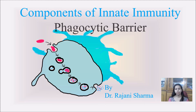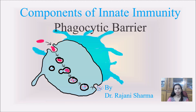We know that innate immunity is known as the first line of defense. Here we will discuss what happens after crossing the anatomical or physiological barrier — what happens if microbes enter inside our body. Innate immunity is also called non-specific immunity, and it is the first to interact with microbes which enter inside our body.